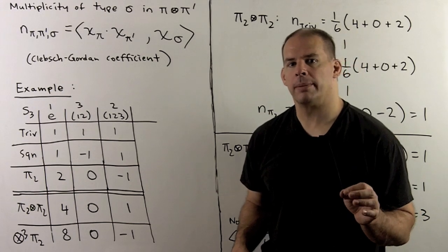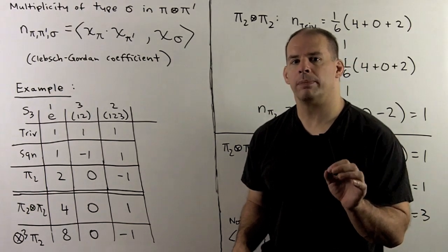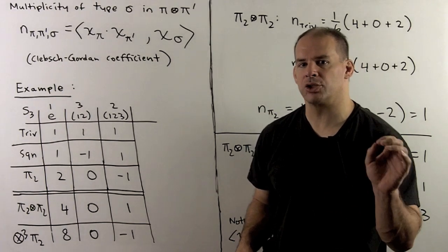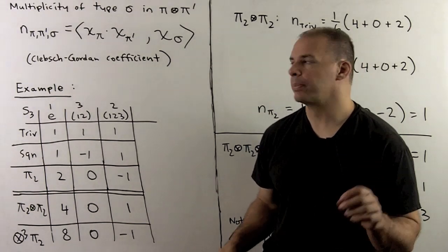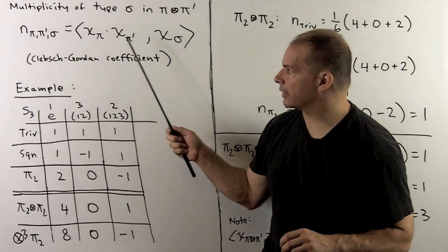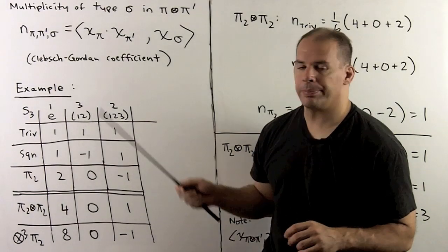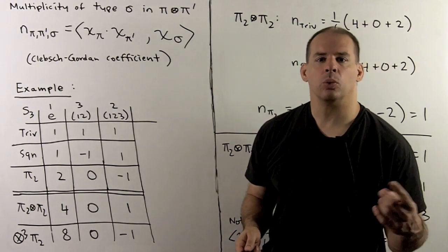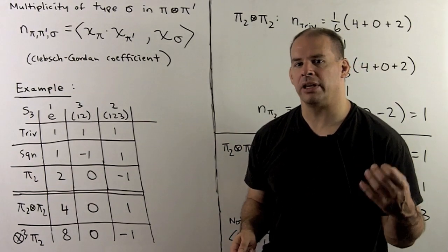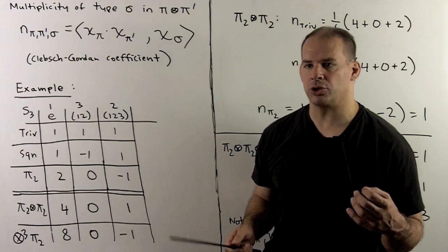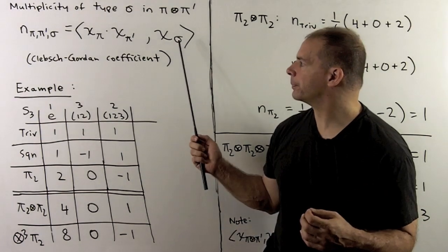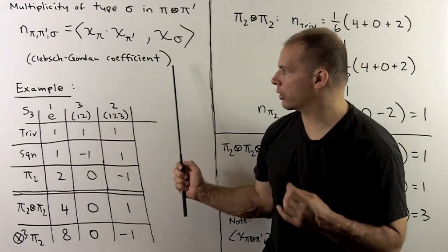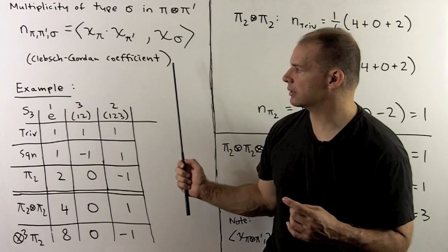With that formula, we have a rule for the multiplicity of an irreducible in a tensor product: take the product of the characters, then take the inner product of that with the character of the irreducible of interest. These get the fancy name Clebsch-Gordan coefficients.